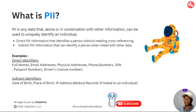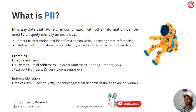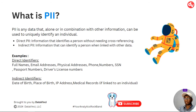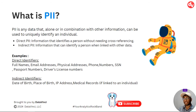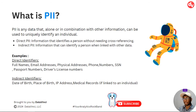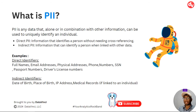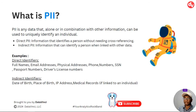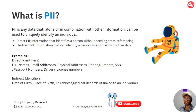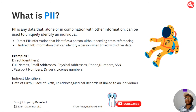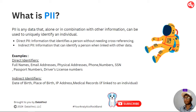So without further ado, let's begin with understanding what PII is. PII stands for Personally Identifiable Information, and as the name suggests, PII is any data that alone or in combination with other information can be used to uniquely identify an individual. That is the key phrase — it can be used to uniquely identify an individual.